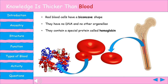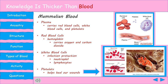Red blood cells aren't the only component of blood. For mammals, blood is a specialized fluid that has four main components: plasma, red blood cells, white blood cells, and platelets. Plasma is a liquid that is the dominant component of the blood — it is a mixture of water, sugar, fat, protein, and salts. The plasma's job is to transport blood cells throughout your body along with nutrients, waste products, antibodies, and clotting proteins.